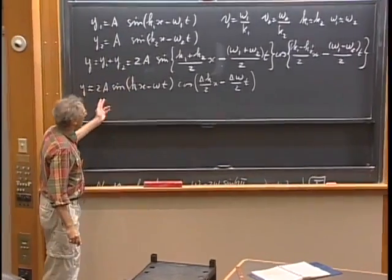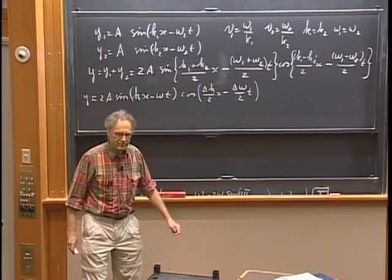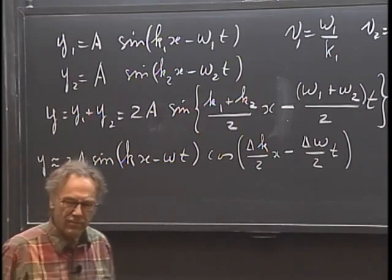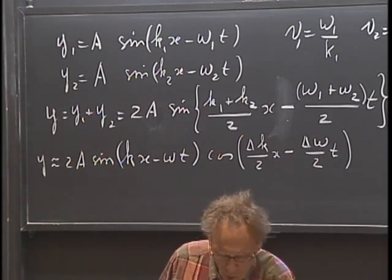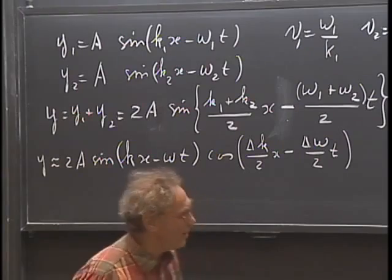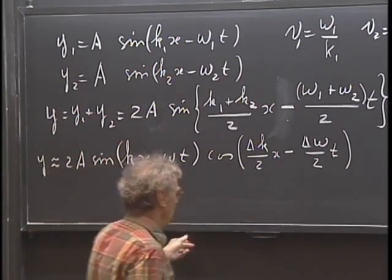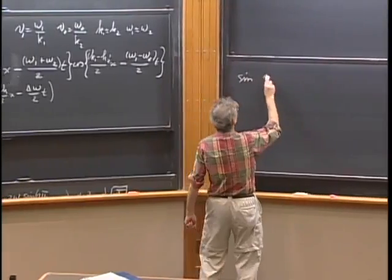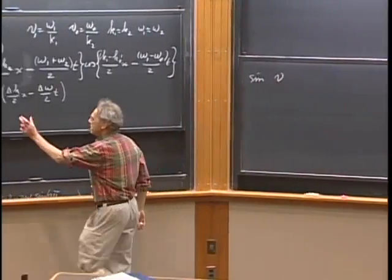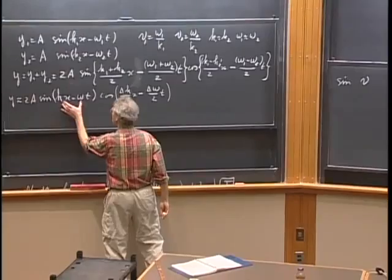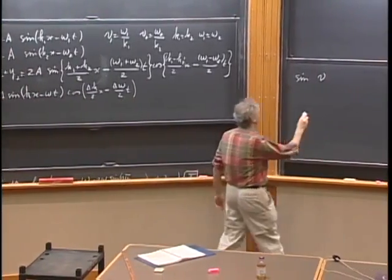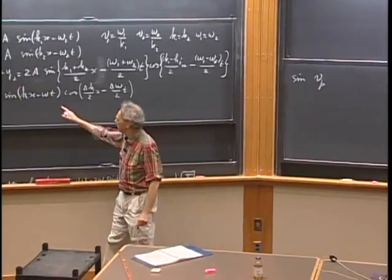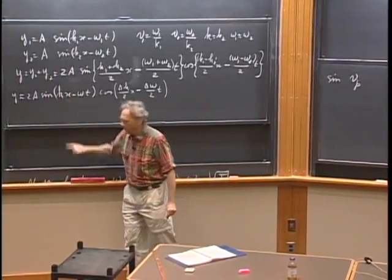If k₁ is approximately k₂ and omega₁ is approximately omega₂, then (k₁ plus k₂)/2 is effectively k, and (omega₁ plus omega₂)/2 is omega, the mean value between the two. So y is approximately 2a times the sine of kx minus omega t times the cosine of (delta k)/2 times x minus (delta omega)/2 times t. The sine term alone is a traveling wave with the phase velocity, which is omega divided by k.